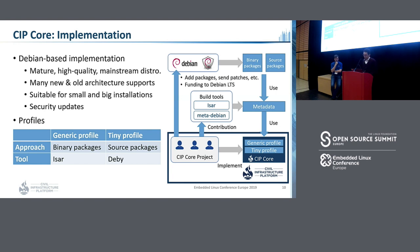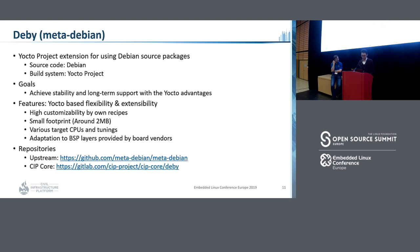CIP core provides two profiles based on Debian. One of them is the generic profile, and the other is the tiny profile. In the generic profile, the approach is binary-based, using the tool Elbe to generate the final image. In the tiny profile, this depends on the source packages of Debian, using Debi as the build tool. We'd like to explain some features of each upstream project.